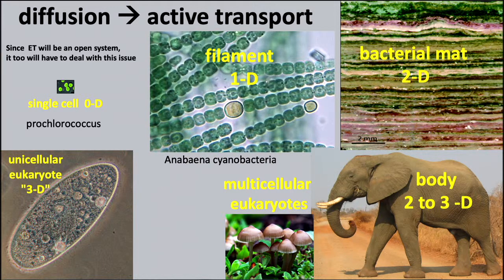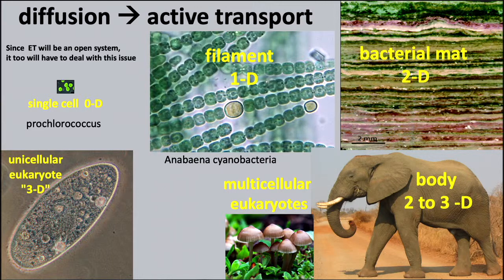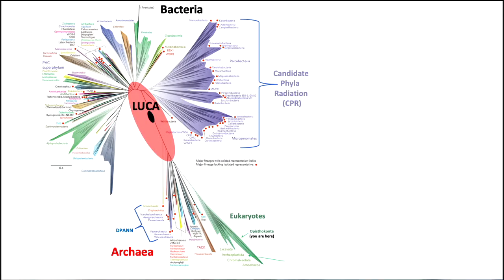Then we have multicellular eukaryotes — like elephants, us, and fungi — which are giant three-dimensional structures requiring vascularization: blood systems, systems to pull in air and distribute it around the body. If you need to dissipate heat, you grow a giant ear, which is a two-dimensional radiator structure.